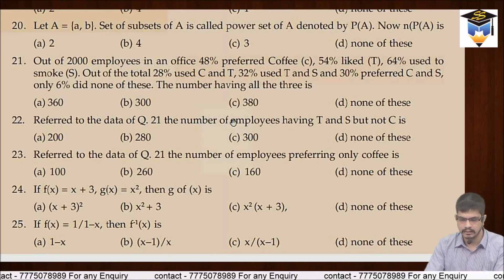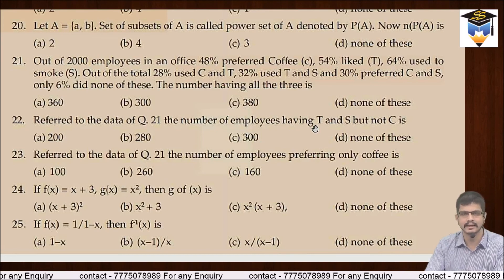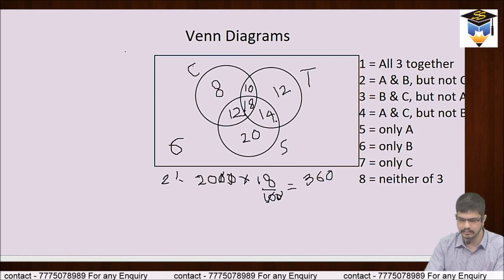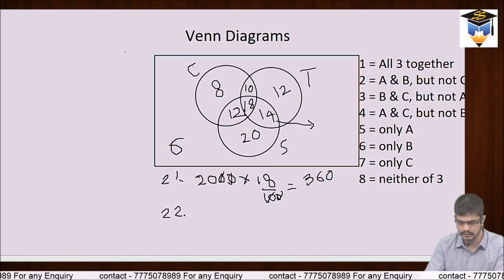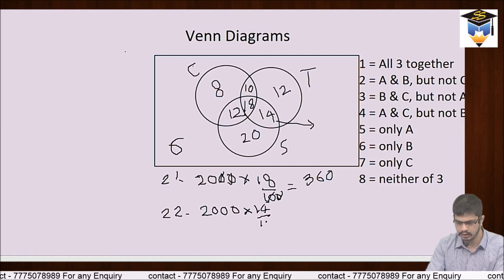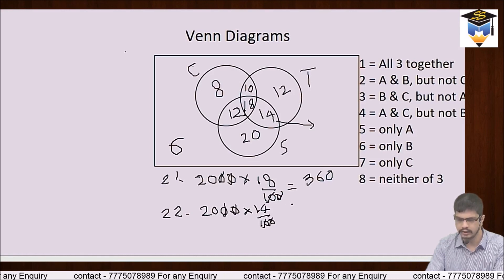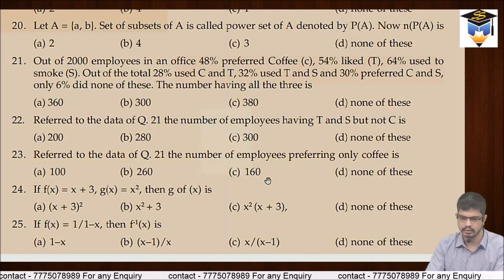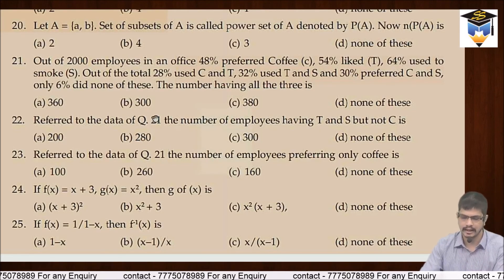Question 22: the number of employees having T and S but not C. Unko bas tea peena hai aur smoke karna hai, coffee nahi. Toh yeh 14% waale hain. 2000 × 14/100 = 14 × 20 = 280. Option B, 280, is your correct answer.